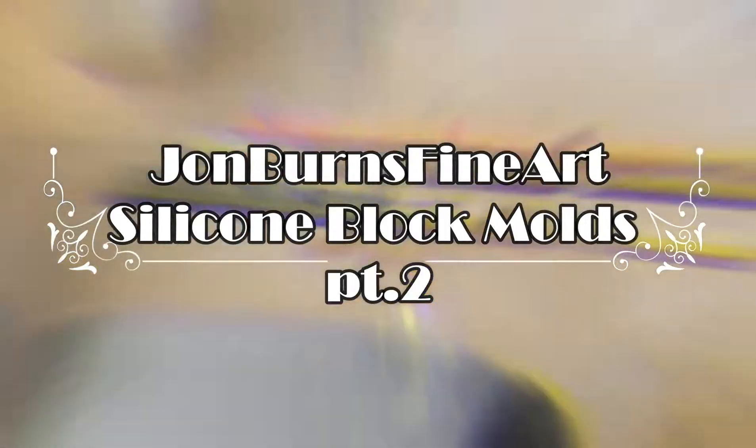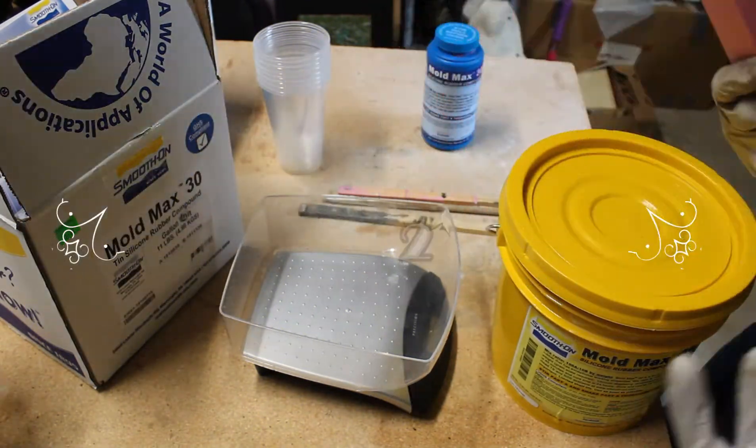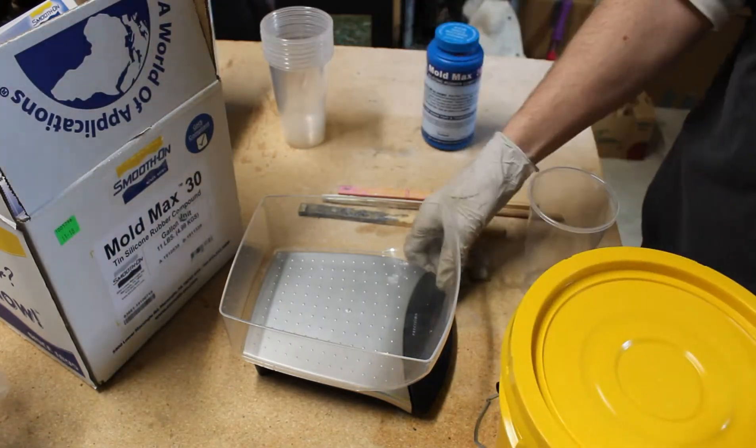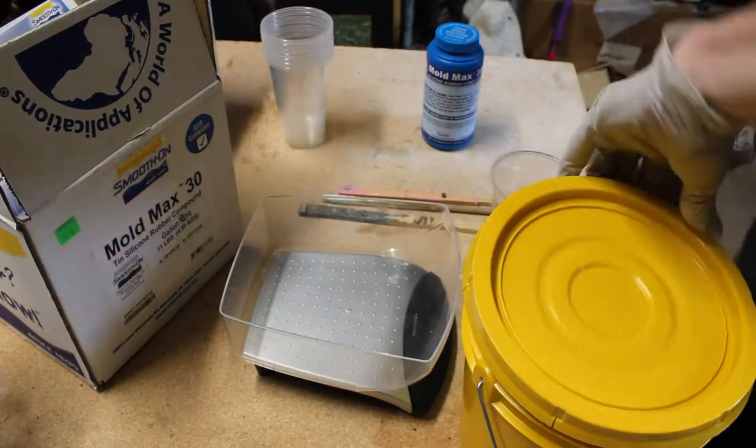Okay YouTube, so we're back for the second part of silicone block molds. Here I'm going to show how to mix and pour the silicone. So we have our digital food scale. The manufacturer says to avoid this if you have a triple beam, but it seems like digital food scales are a little more common.